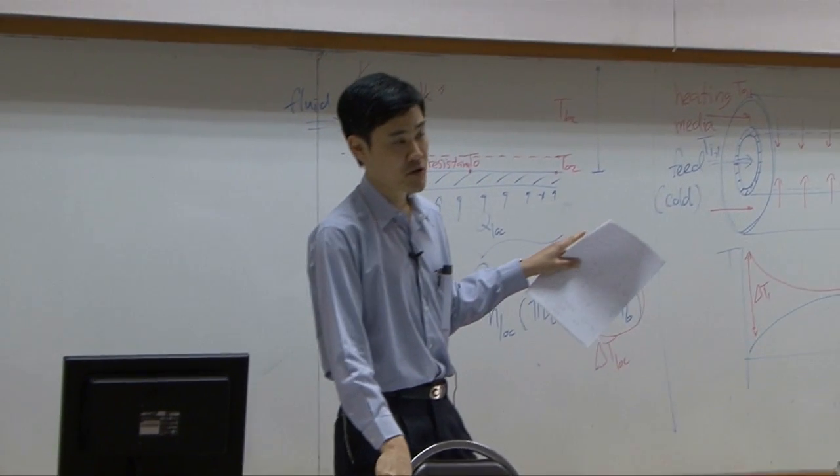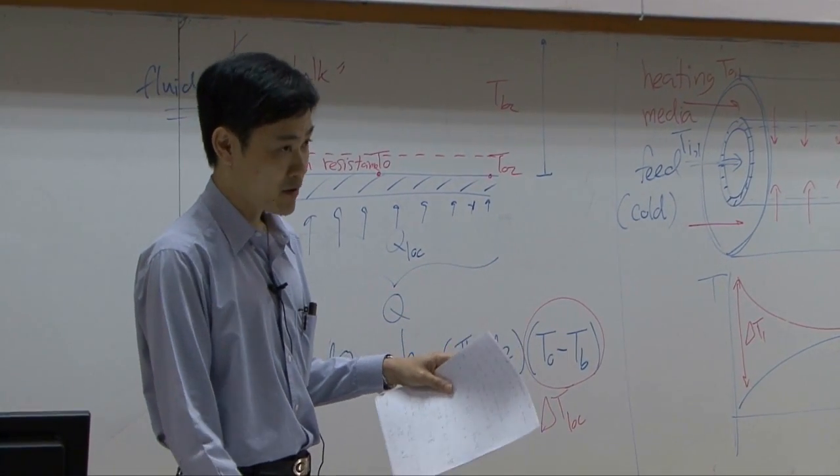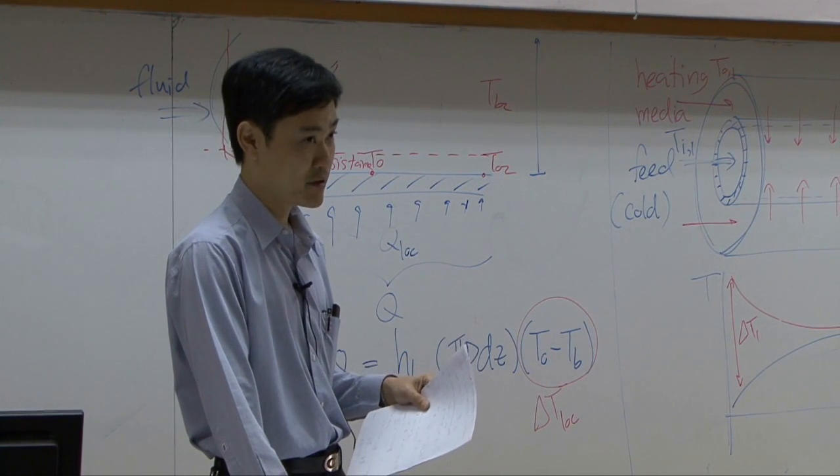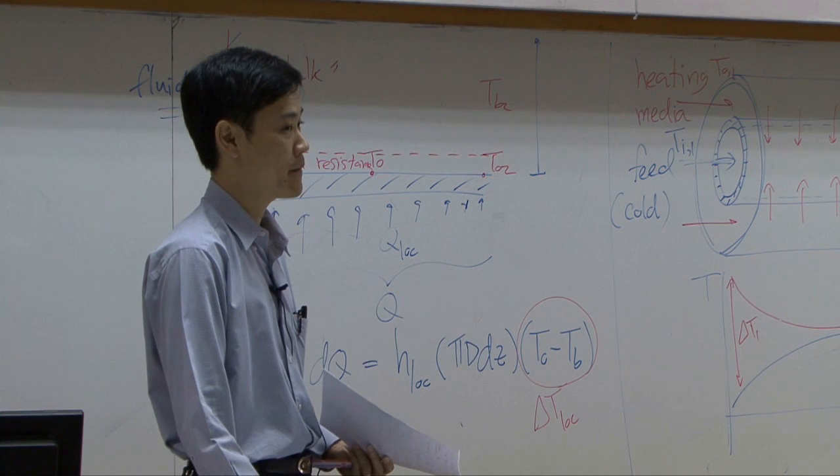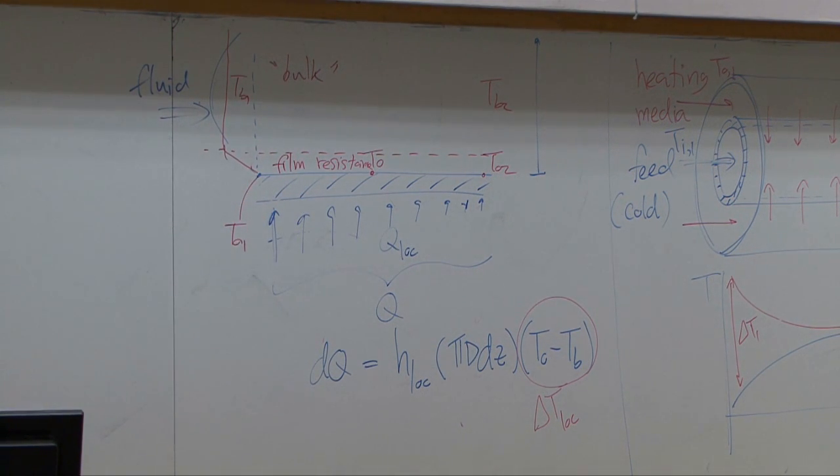Now, in order to use that Newton law of cooling equation, the most important part that you need to find is the heat transfer coefficient. So heat transfer coefficient itself, sometimes it is listed or printed in the handbook, but normally it will not be printed in terms of H itself.